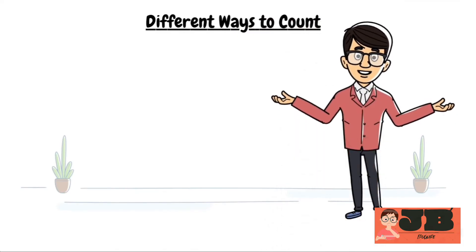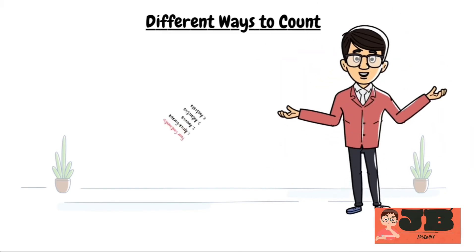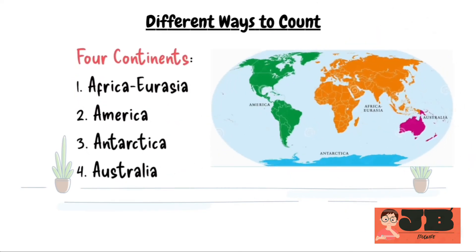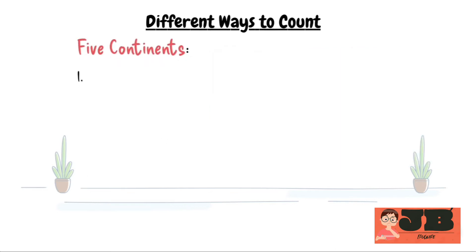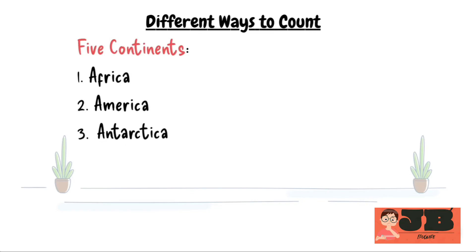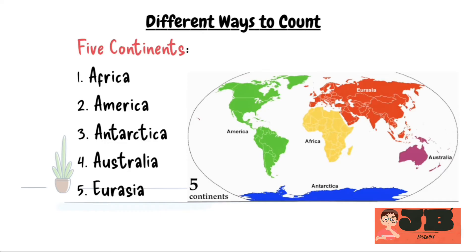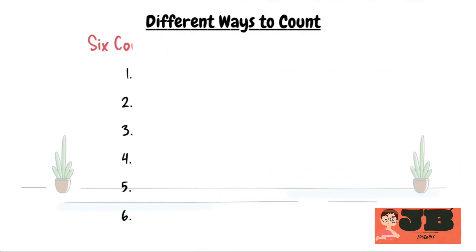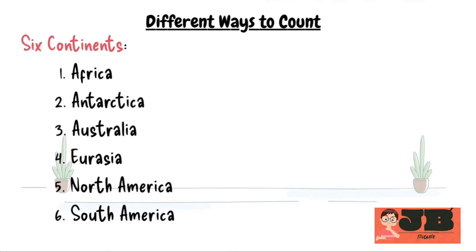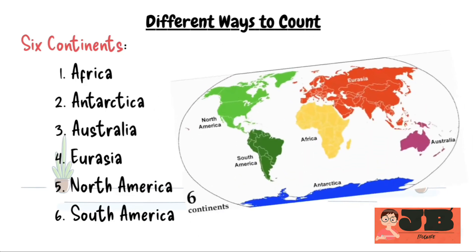The first type of count includes 4 continents: Africa, Eurasia, America, and Antarctica/Australia. The second division divides into 5 continents: Africa, America, Antarctica, Australia, and Eurasia. You can see the map. The next division includes 6 continents: Africa, Antarctica, Australia, Eurasia, North America, and South America. See the map.